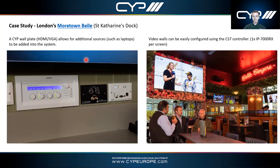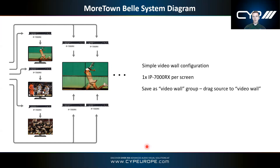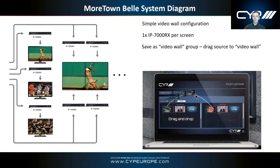For video walls within this AV over IP system, each screen in the video wall has its own IP7000 receiver. You configure the video wall entirely using our controller and hardware — no separate video wall controller needed. You save the group as a named video wall, and it then appears on the right side of the monitor and control page. You simply drag content to the video wall group and it populates across all screens.